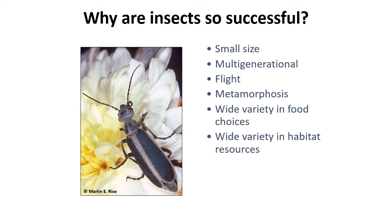Why are insects so successful — meaning why are there so many types of insects and why are they so abundant? Many theories exist. One is that insects are small in size, allowing them to take advantage of many niches or suitable living spaces in the environment. Another is that insects have many generations in short time periods, allowing improved chances for mutation that create new species. Insects also undergo a unique metamorphosis that allows adult and immature insects to take advantage of different food sources and niches, so the adults aren't competing with their young for food. All of these things allow insects to eat a wide variety of foods and live in many different habitats throughout the world.